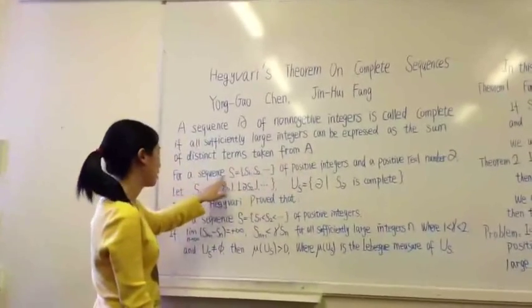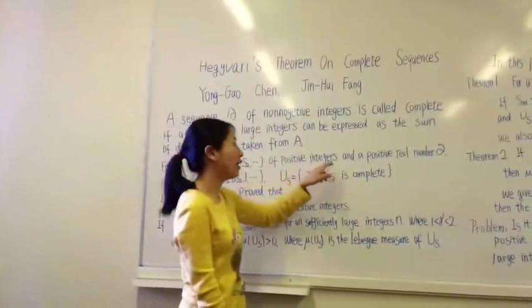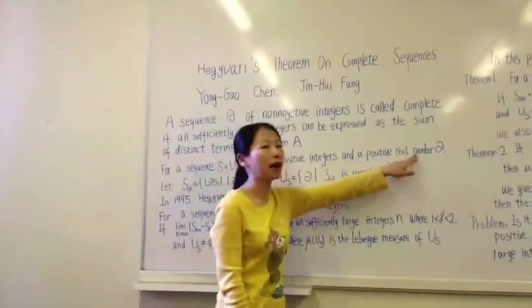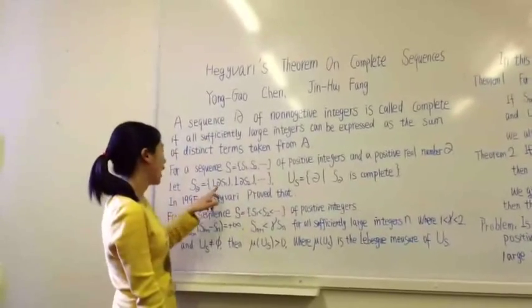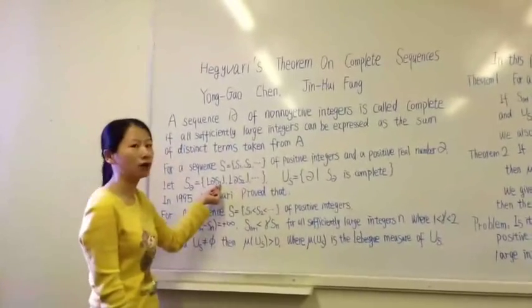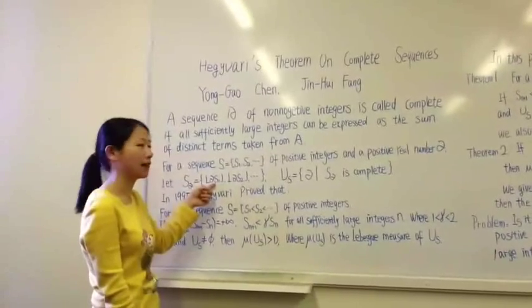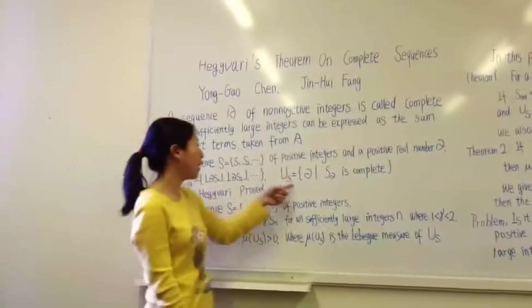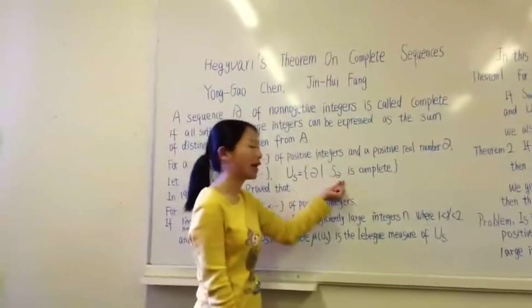For a sequence S equals S1, S2 of positive integers and a positive real number alpha, let S alpha equal alpha S1, alpha S2, where this notation denotes the greatest integers no greater than alpha S1. Let mu of S equal the set of all alpha such that S alpha is complete.